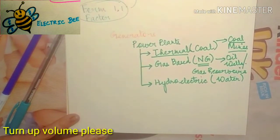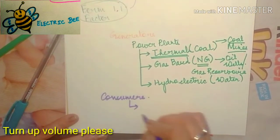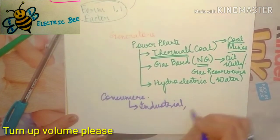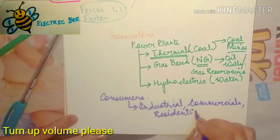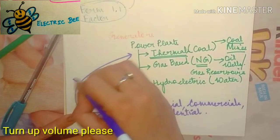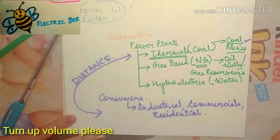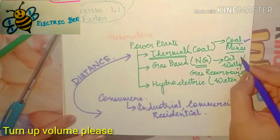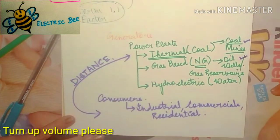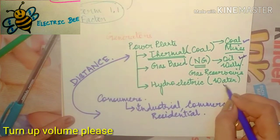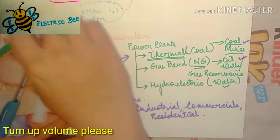Consumers — including industrial, commercial, and residential consumers — cannot live near a power plant. You cannot live near a coal mine due to pollution, nor near an oil well due to constant exploration activity. You also cannot live near a hydroelectric dam because if it collapses, there are chances of serious accidents.